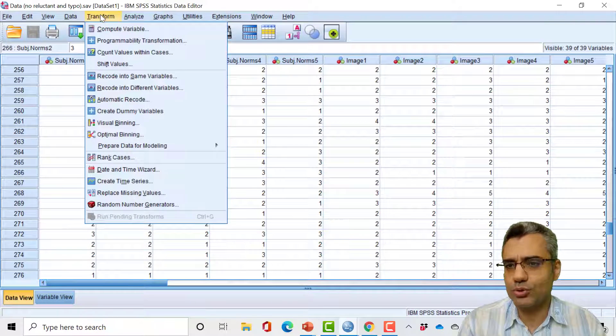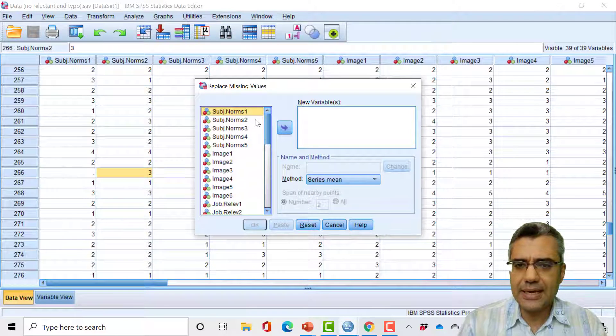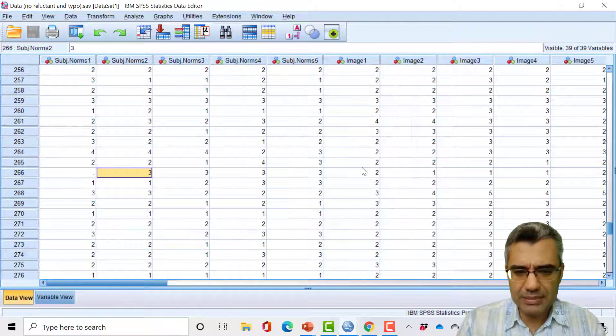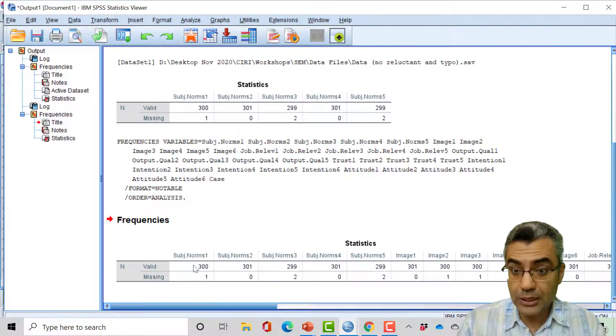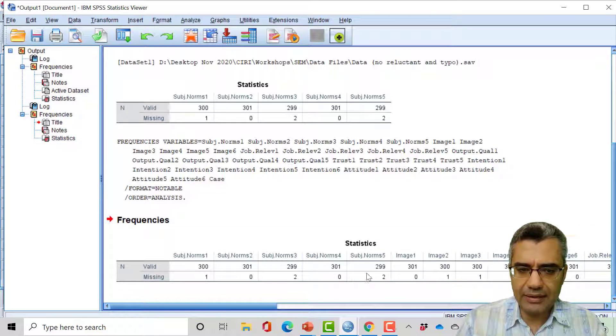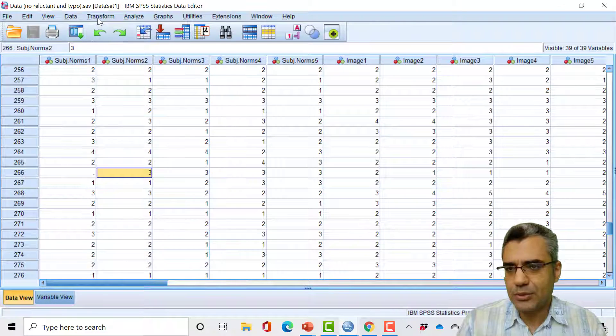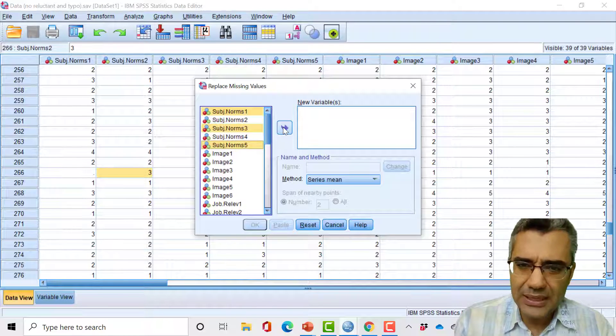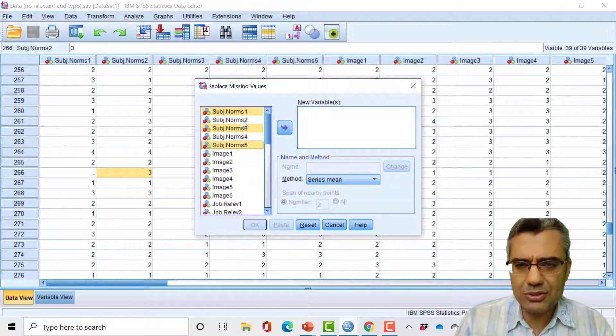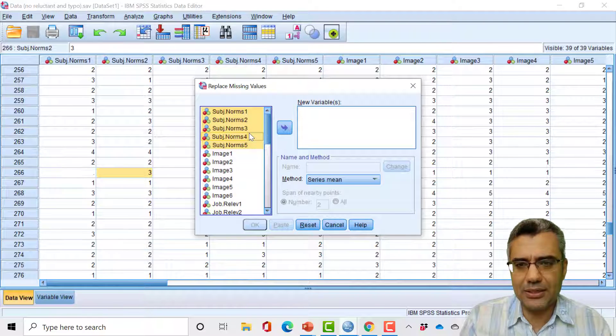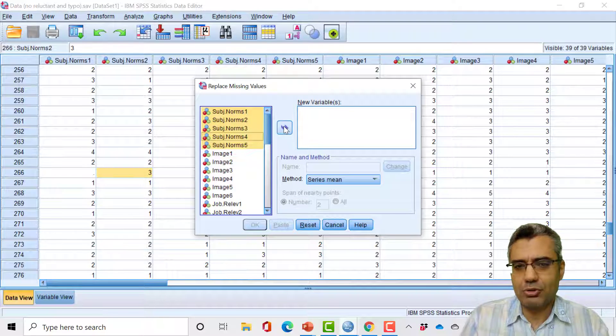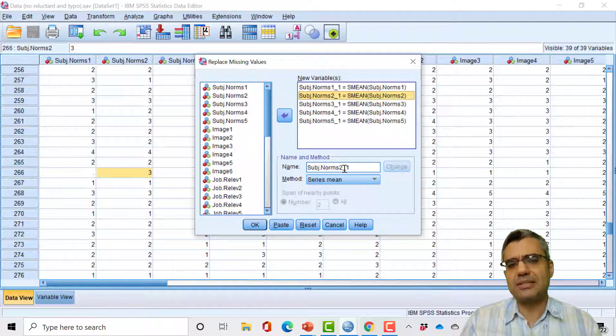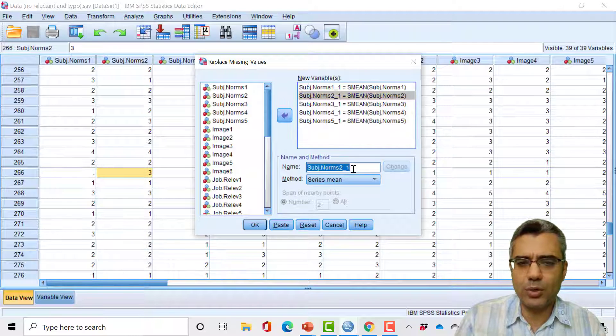You can refer to this slide if you want to replace the missing case with the mean, mode, or median. So Transform, Replace Missing Values. I think subjective norm one, three, and five have missing cases. So I go to Transform, Replace Missing Values, one, three, and five. But even no need to check the SPSS output, you can select all of them. If there is no missing, nothing will happen. I just move all of them to the right box.